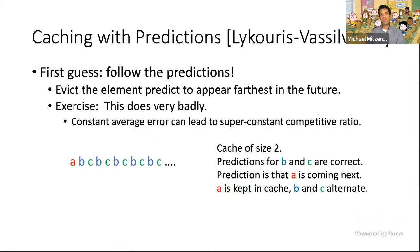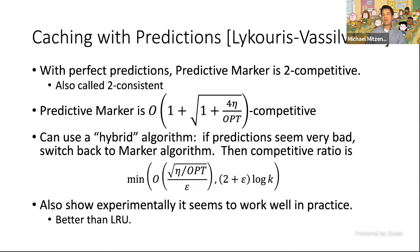Simply following the predictions — evicting the element predicted to appear farthest in the future — does very badly. A single misprediction for item A can cause you to keep it in the cache while repeatedly kicking out items B and C. You need to update your belief and eventually evict A to maintain a good competitive ratio. Their solution: a version of the marker algorithm using predictions, with a hybrid that switches back to the standard marker algorithm if things look bad, maintaining roughly its competitive ratio but doing better when predictions are good.